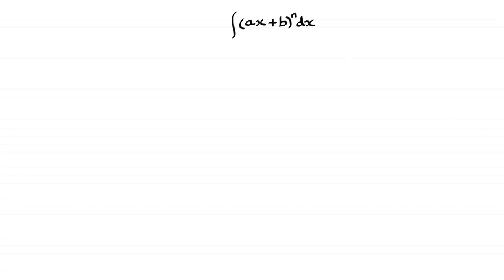You're going to get integrals that look like this one here: 5x minus 1, all to the power 3. You can see that a is 5, b is minus 1, and n is 3. Now, you could expand this out and then integrate all the terms, but what I'm going to show you in this video is a much simpler way, leading to a very simple answer.